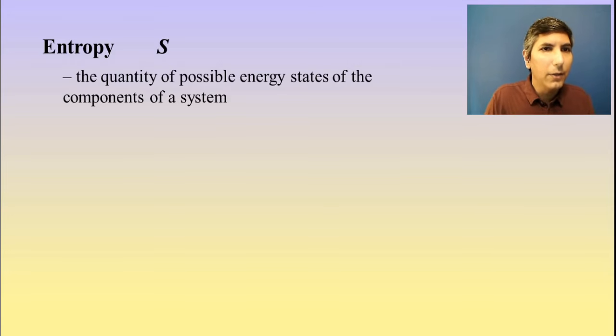Now as you can see here, the letter or the variable that we use to talk about entropy is S. We've talked about this a bit in unit 7, but we're going to talk about it much more here in unit 9. Now entropy, if you were to look this up in a physics book or in a chemistry textbook or maybe even in the dictionary, you'd find that entropy is defined as the quantity of possible energy states of the components of a system. In other words, the more possible energy states that molecules can have, the higher the entropy is going to be.